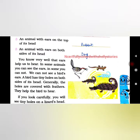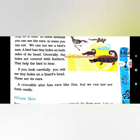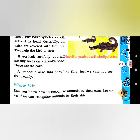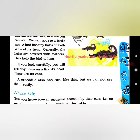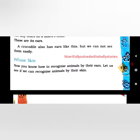You know very well that ears help us to hear. In some animals you can see the ears; in others we cannot. There are small holes on both sides of the head, and the holes are covered with their feathers. You will see tiny holes on a lizard's head. For the crocodile, they are the same — but we cannot see them.